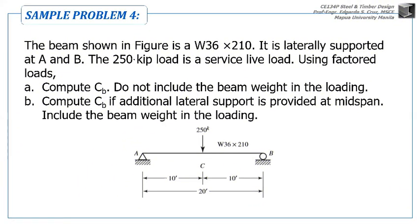Okay, so we have a beam shown in this figure which is W36x210, a standard wide flange section. It is laterally supported at A and B. At the ends of the beam, it's laterally supported. Automatic, whenever there are supports, the beam is always laterally supported on its supports.